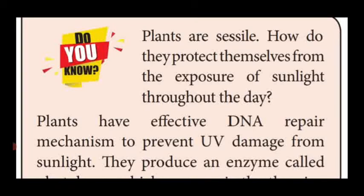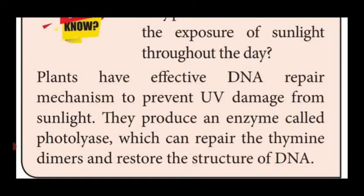Some plants are sessile — how do they protect themselves from exposure to sunlight throughout the day? Plants have an effective DNA repair mechanism to prevent ultraviolet damage from sunlight. For this, DNA produces an enzyme called photolyase, which can repair thymine dimers and restore the structure of DNA. So the thymine dimer, which causes damage in DNA, is replaced by the enzyme photolyase, which restores the original DNA structure and protects plants from ultraviolet damage.